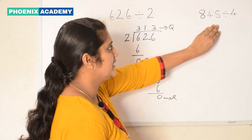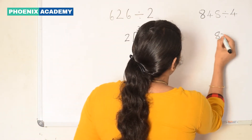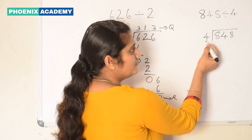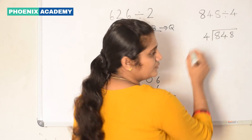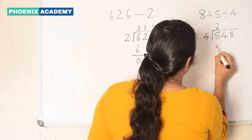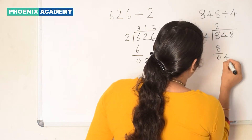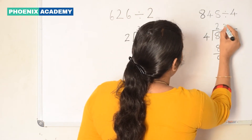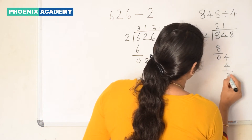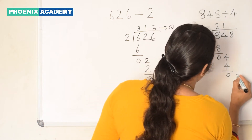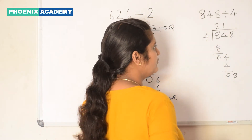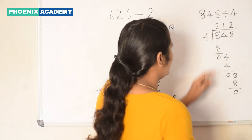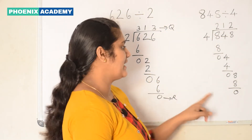Let's divide 848 by 4. Let's arrange the numbers like this and divide the digit in the 100th place by 4. 8 divided by 4. 2 4s are 8. Bring down the digit in the 10th place and divide by 4. 4 divided by 4 is 1. So we write 1 here and 4 below the dividend. Then subtract. We get 0. Then bring down the digit in the 1s place: 8. Again 8 divided by 4. 2 4s are 8. Subtract, we get 0. Here we get 212 as the quotient and 0 is the remainder.